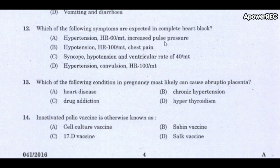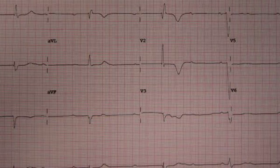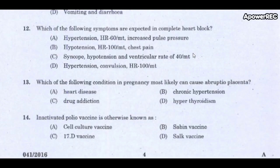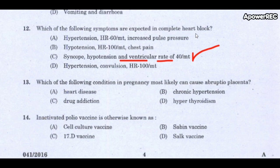Next question: which symptoms are expected in complete heart block? The correct answer is syncope, hypotension, and a ventricular rate of 40 per minute. Complete heart block occurs when electrical signals cannot pass normally from the atria to the ventricles — the atria being the upper chambers and ventricles the lower chambers.